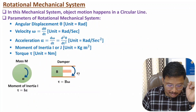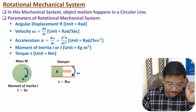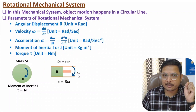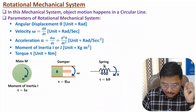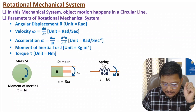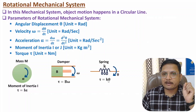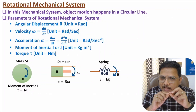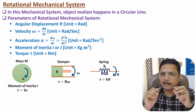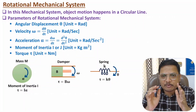If you have a damper with angular velocity omega and damping constant b, then the torque associated with the damper will be T = b × omega. If you have a spring with angular displacement theta and spring constant k, then the restoring torque with the spring will be T = k × theta. You can compare these with the corresponding linear motion equations.